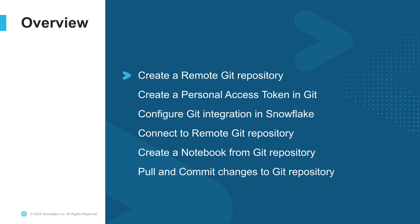In this video we'll show you how you can create a remote git repository, create a personal access token in git as a secret, configure git integration in Snowflake, connect to the remote git repository, create a notebook based on the content in your git repository, and finally pull and commit changes to your git repository. Our video today will be pretty comprehensive so feel free to use the chapter sections in the video progress bar to skip ahead or rewind to sections that you're interested in. All the code examples shown today are available at our notebook demo GitHub repo, so be sure to check out the link below. And with that, let's dive right in.